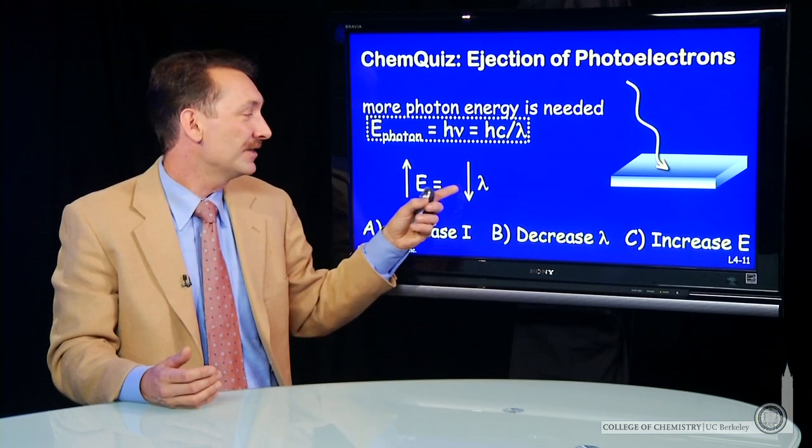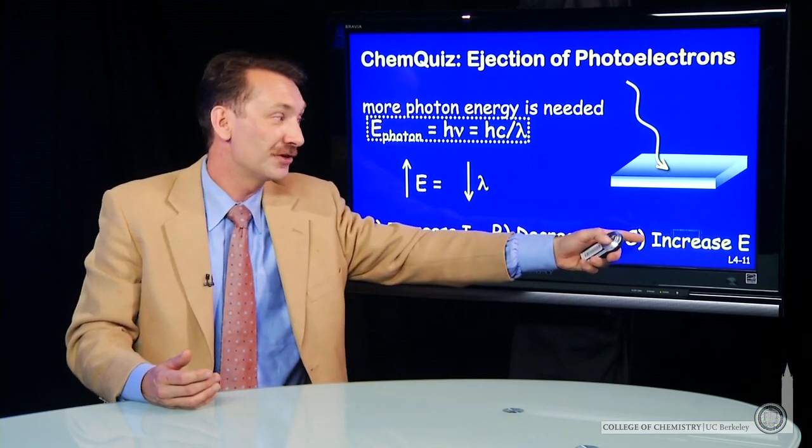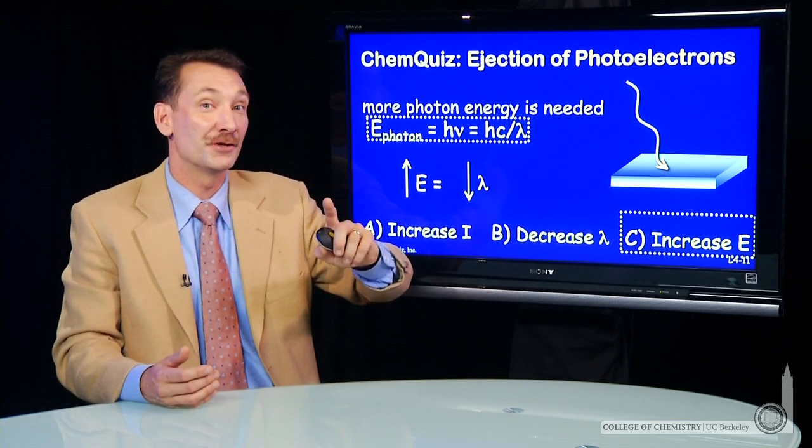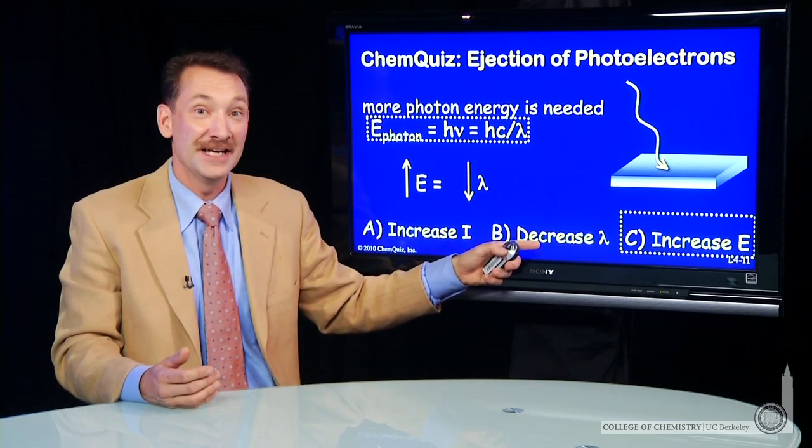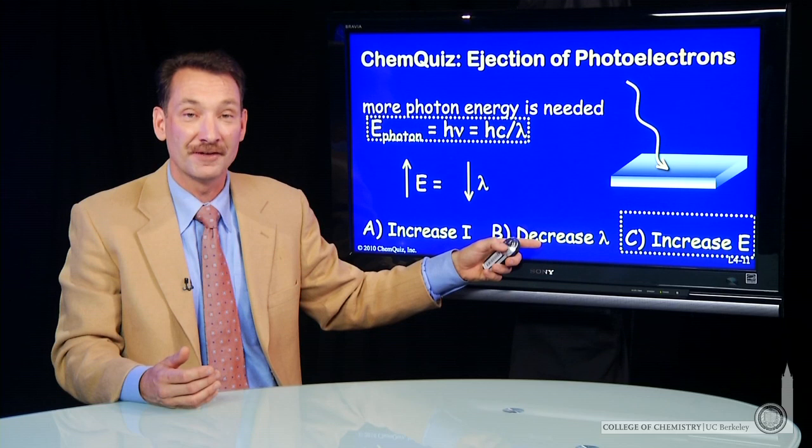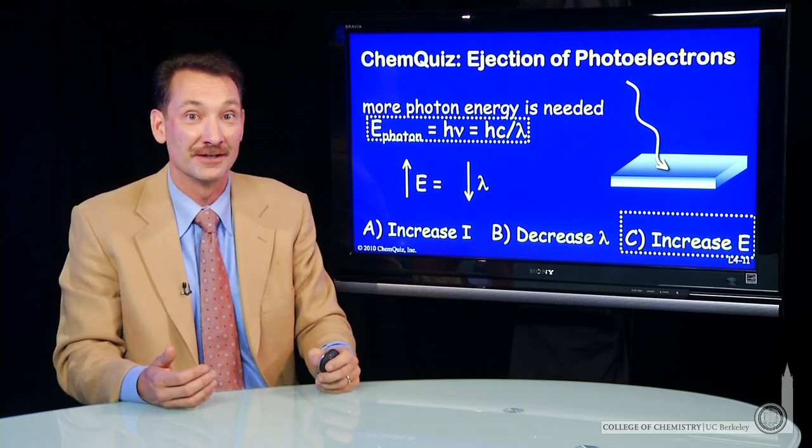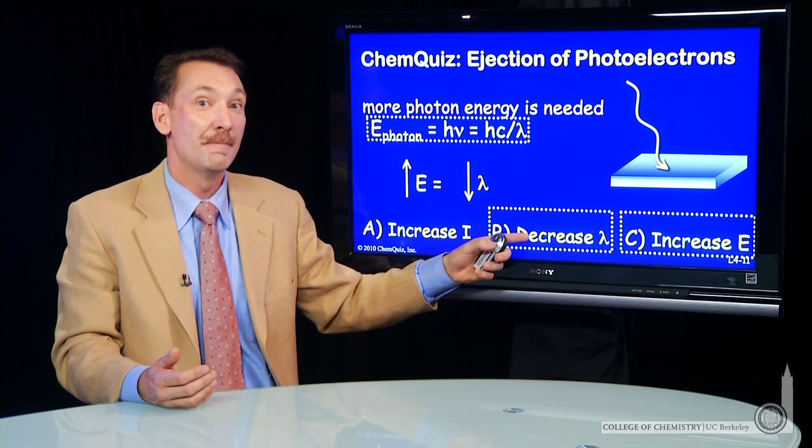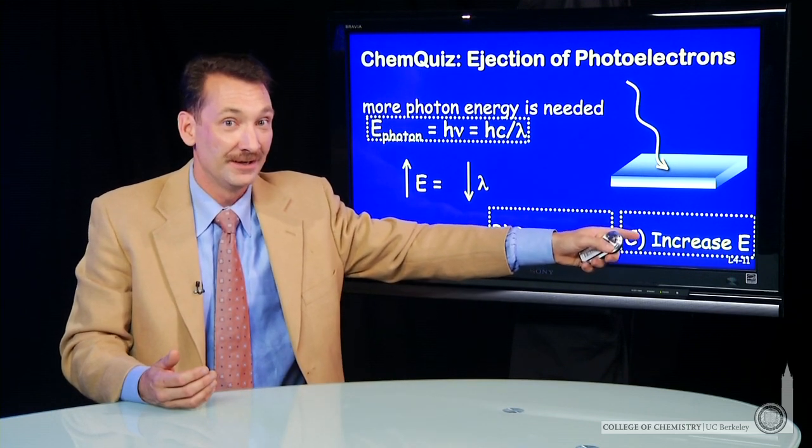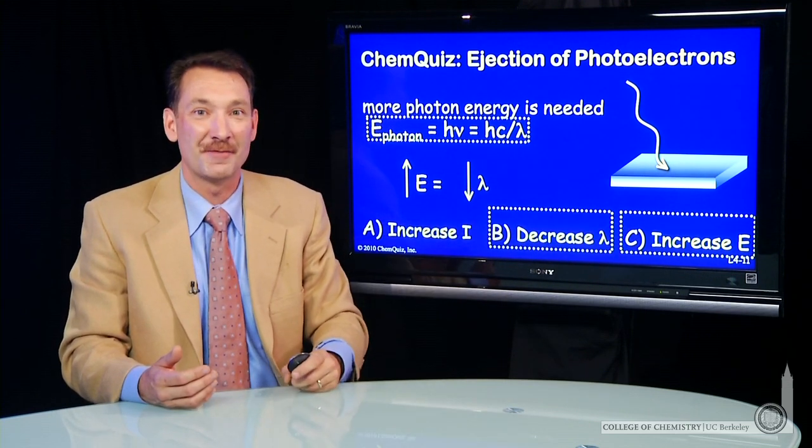So increased energy photons will work. Answer C. But if you are clever, you also noticed a decreased wavelength in the photon will also work, because that will increase the energy. So here you could have answered B or C, and you would have got an electron ejected from that metal.